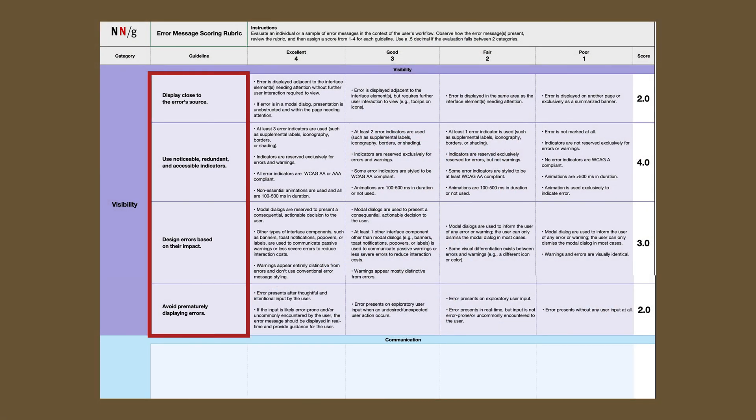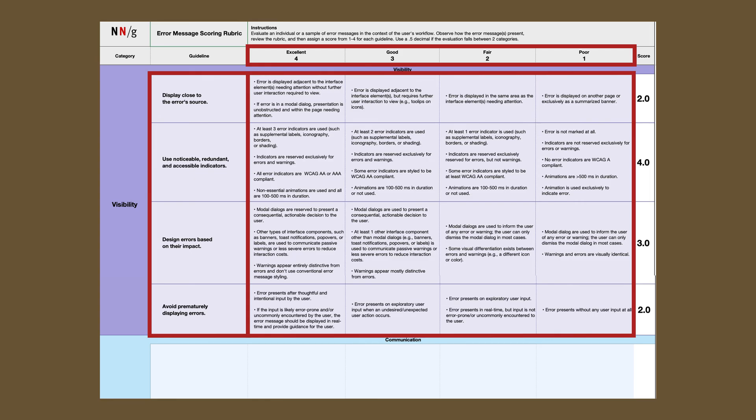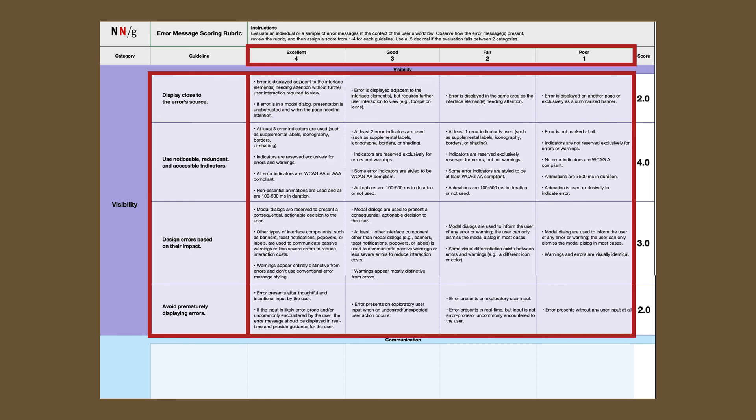Each dimension has four guidelines, and they can all be scored from excellent — four points — to poor — one point. The important section is the detailed scoring criteria for assigning a particular score. You can use a 0.5 decimal if the error message falls between two scores. Avoid sharing answers prematurely with others to reduce groupthink and bias.